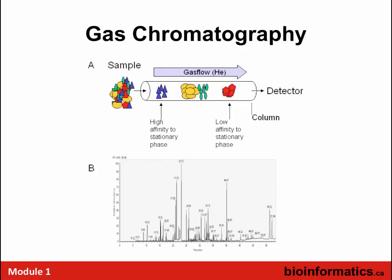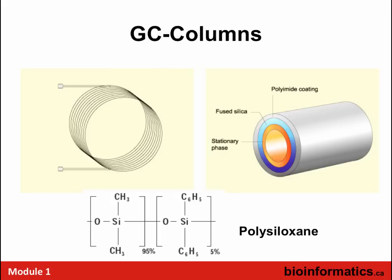The inert gas — usually helium — carries things through the GC column. Things with higher affinity stick to the walls and migrate more slowly; those with lower affinity come off more quickly. The level of separation you get in GCMS is just amazing. Instead of a C18 column as in HPLC, there's typically a compound called polysiloxane — a mix of aliphatic and aromatic compounds — adhered to the interior of the very thin tube, responsible for the affinity of different volatilized compounds.